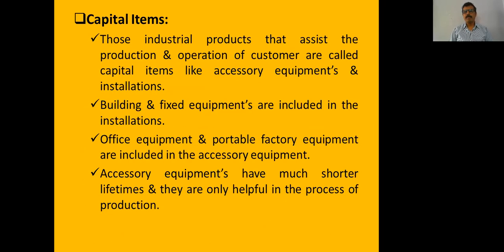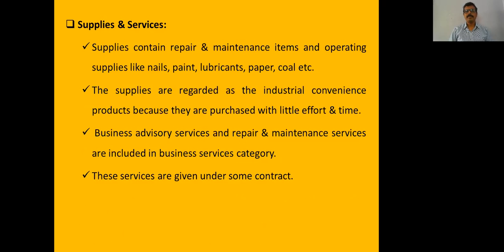The second type of industrial product is capital items, such as accessory equipment, installations, and factory equipment. The third type is supplies. The difference is that spare parts are found in the finished product after production, but supplies may not be found after production — they are consumed in the process.